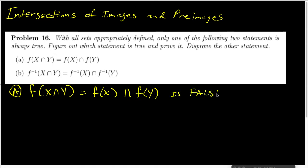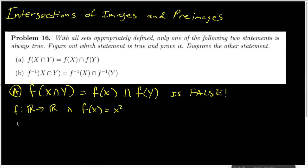To prove a statement is false, all I need is a counterexample. The counterexample is going to be based on this function. I'm going to let f(x) simply be x squared. We're going to let the set X be {1, 2}, and we're going to let the set Y be {1, -2}.